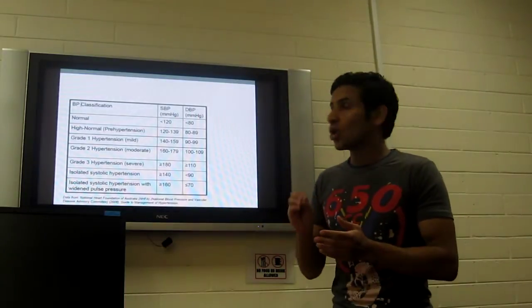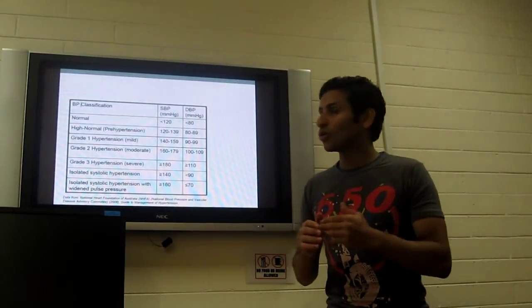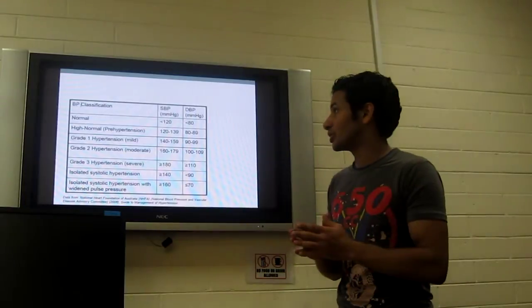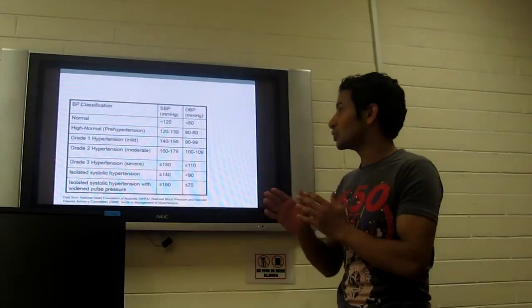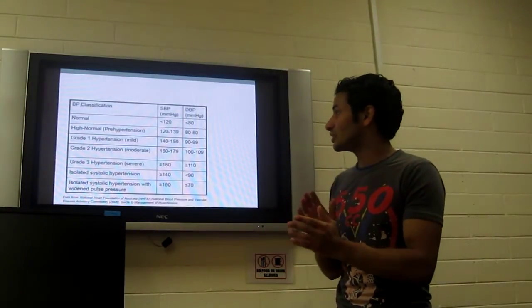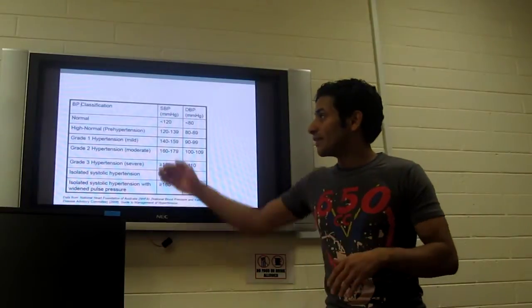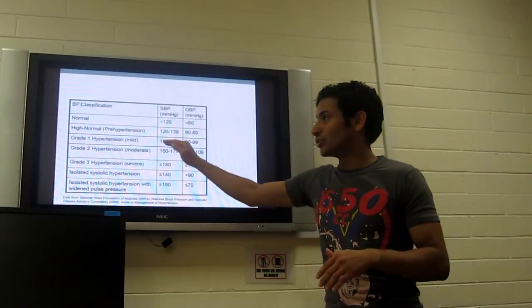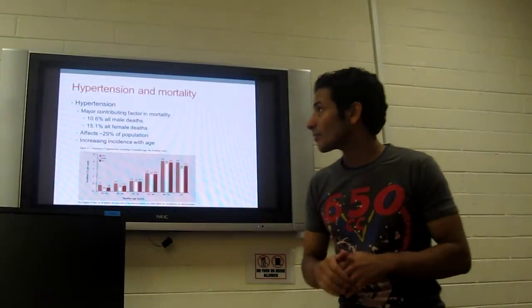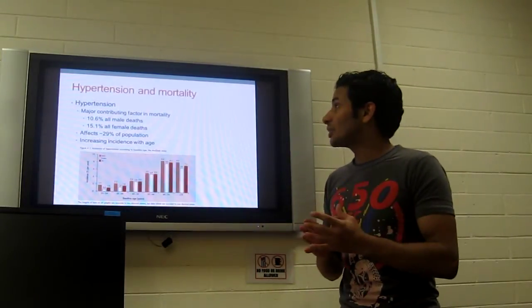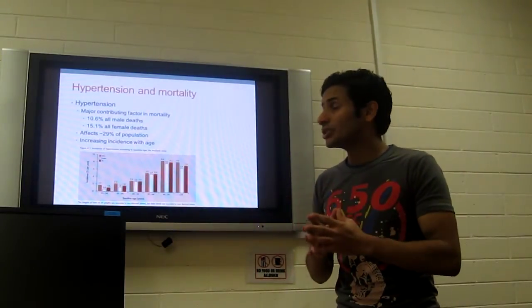The normal one is 120 over 80, and high normal, which is called pre-hypertension, is between 120 to 139 over 80 to 89. And these are the grades of hypertension: grade 1, grade 2, and grade 3.